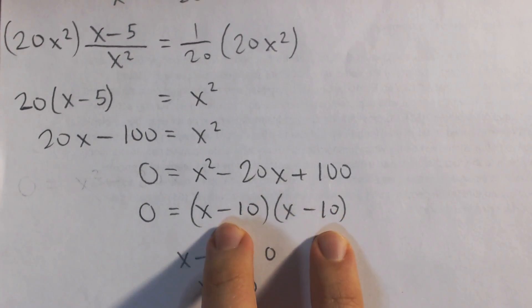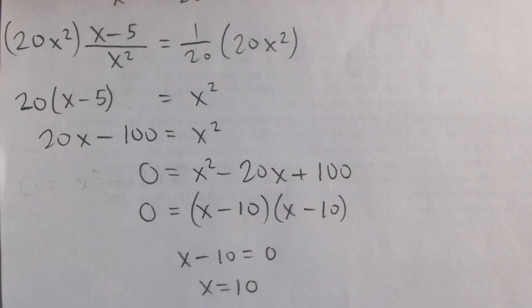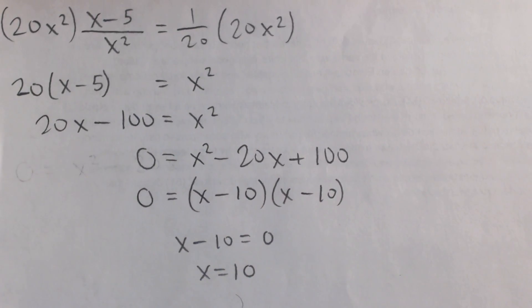And then, so we can set both of these equal to 0, but they're the same thing, really. So just x minus 10 equals 0. And so x is equal to 10. And so that's going to be our final answer.